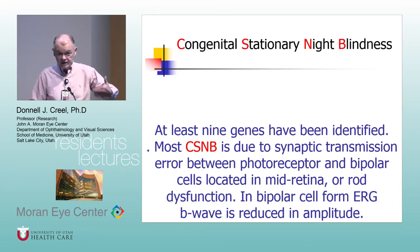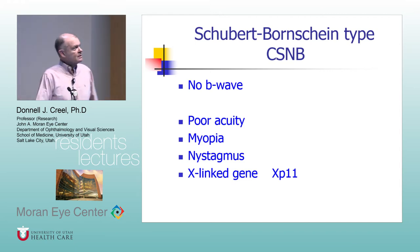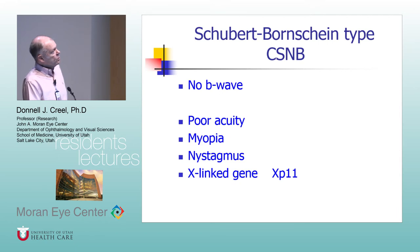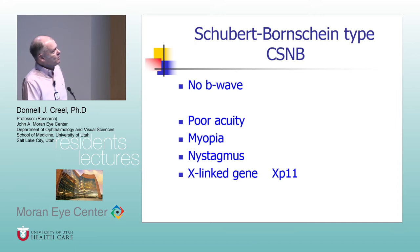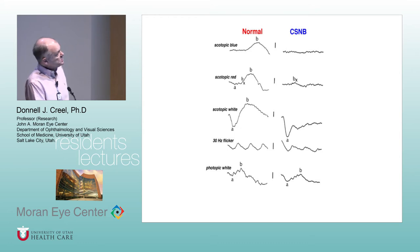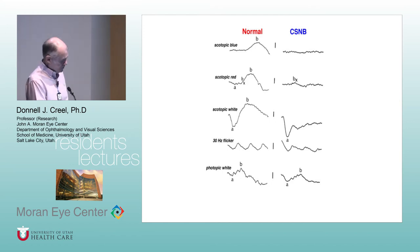If you just look at the electroretinogram, there are different kinds. Today the term used is 'classic' — no B wave, poor acuity, myopia. You get no B wave, just a little BX from the cones. The 30 hertz flicker is attenuated but present — because 30 hertz flicker is just a chain of B waves from the cones, which are less sensitive to this abnormality.